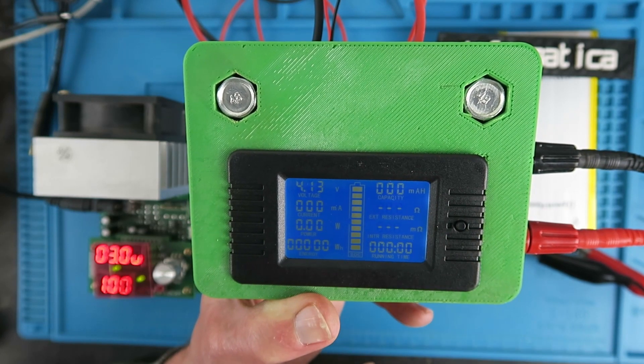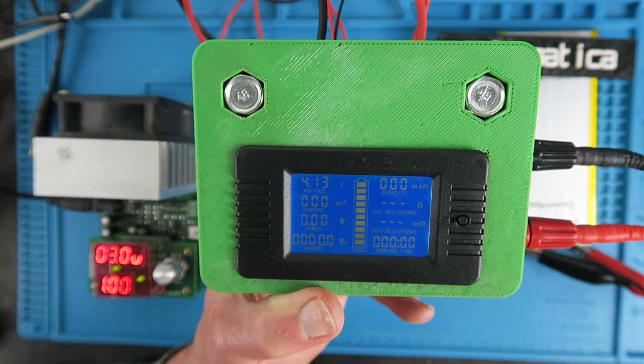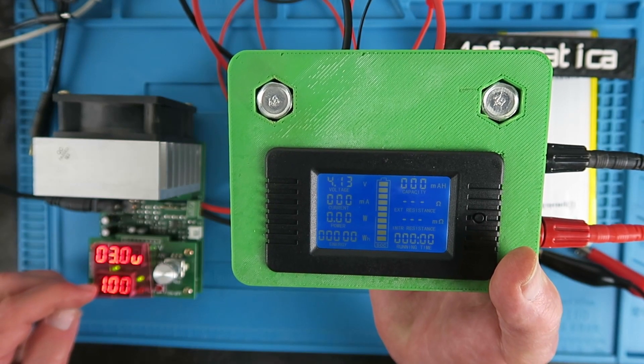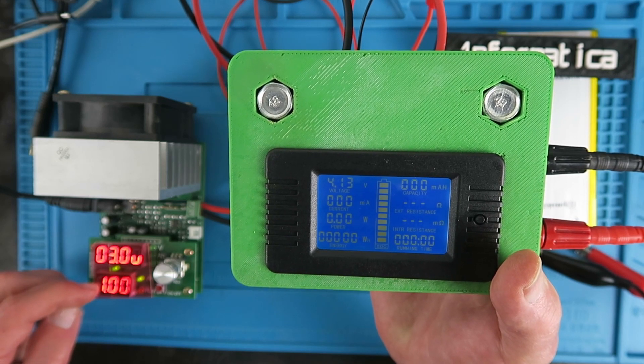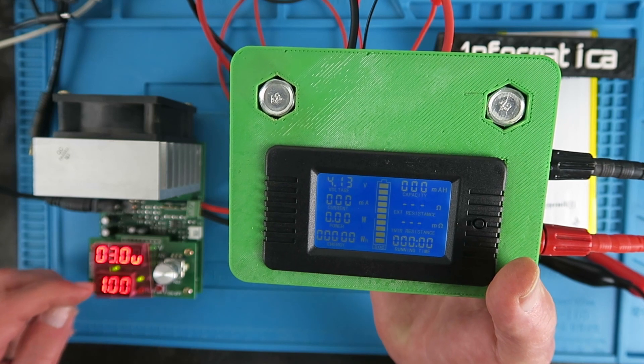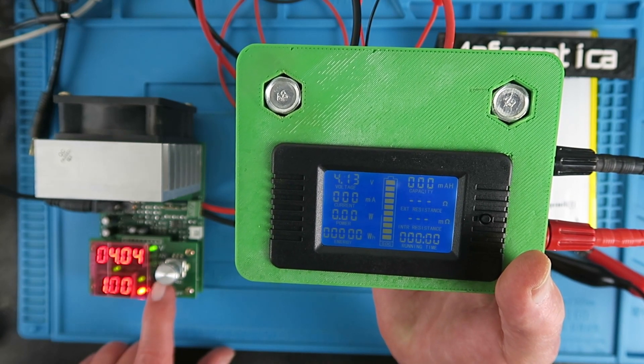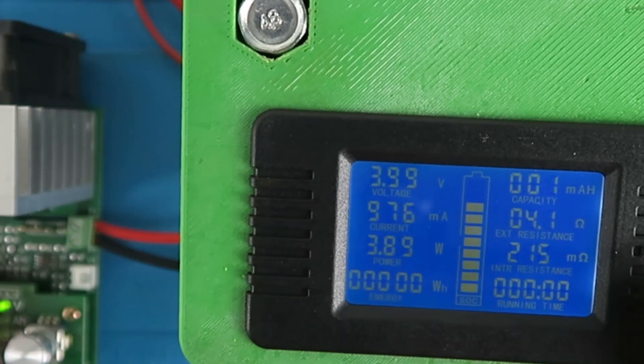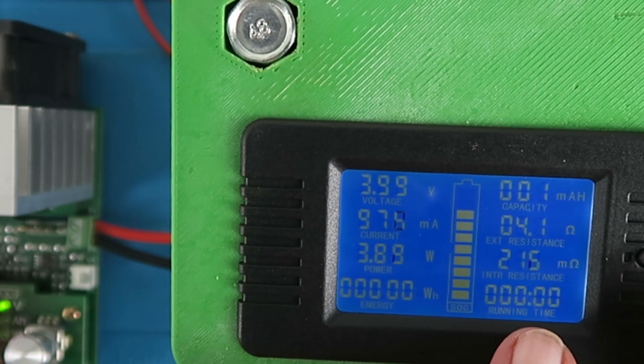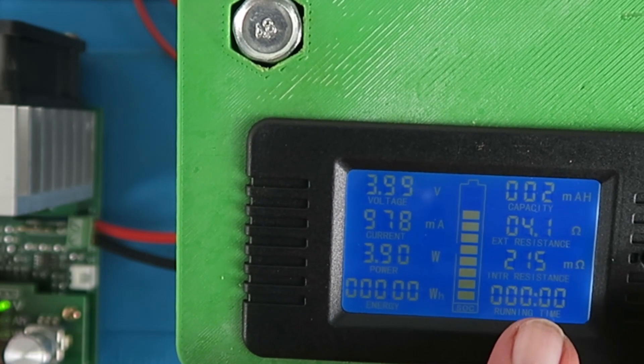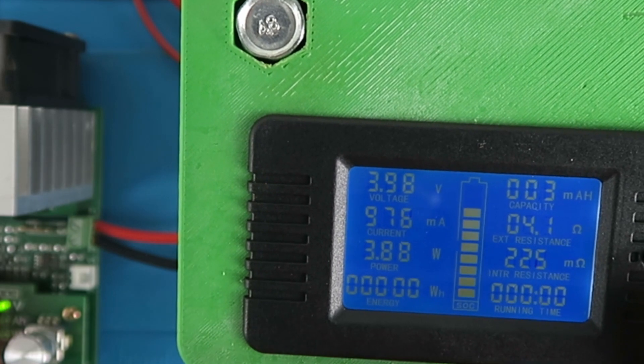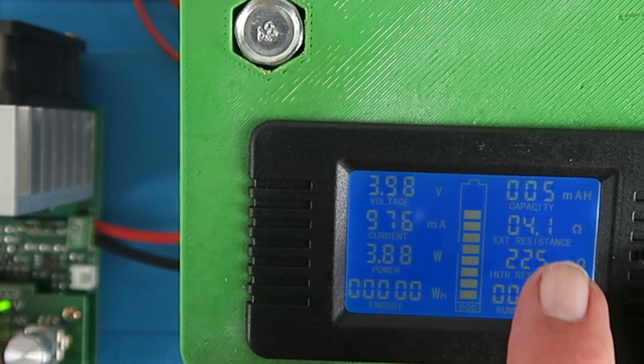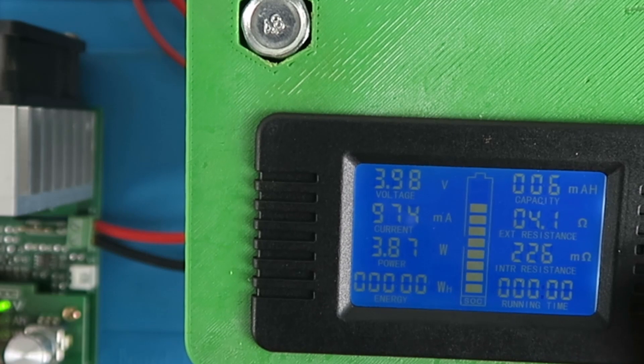At the moment there are no resistance measurements because I haven't switched my load on. The only value we need to concern ourselves with on the load is the current which is currently set to 1 amp. If I then switch the load on we can see the 1 amp there and as I mentioned before the internal resistance is lower, only 200 odd milli ohms there as the state of charge is higher. The resistance of the external load is given as 4.1 ohms.